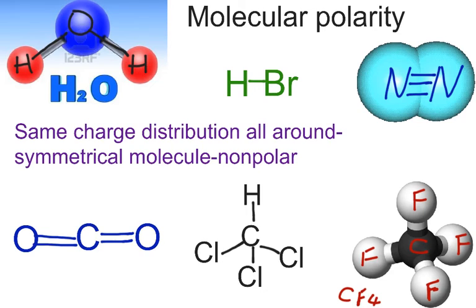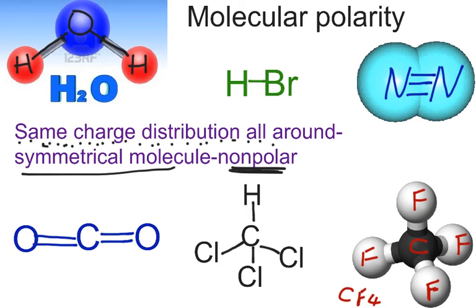We know how to do bond polarity, and that's going to help us determine the overall symmetry of the molecule. If we know that a molecule is symmetrical, we can say the molecule is non-polar. If a molecule has the same charge distribution all around, it's symmetrical, and any symmetrical molecule will be non-polar. My memory device for that is 'symnon' — any symmetrical molecule will be non-polar.